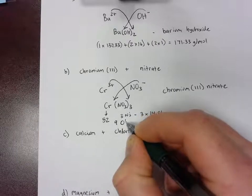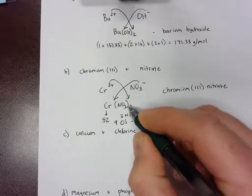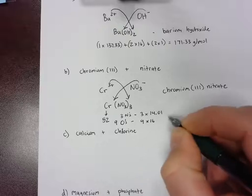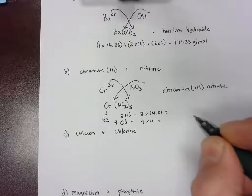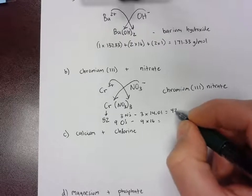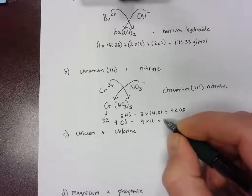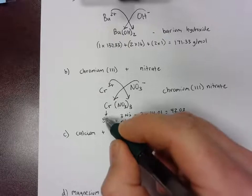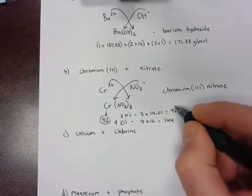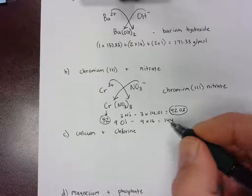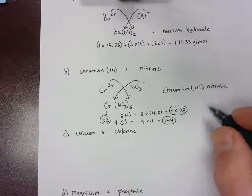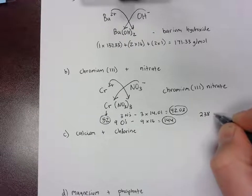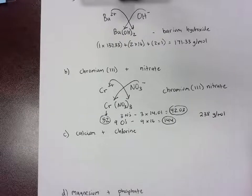We multiply three times 14.01 because again this three is distributed to the nitrogens inside. And then the oxygen, there are nine oxygens, three times three here, so we go nine times 16. This is going to be 42.03 and then this will be 144. We add all these numbers together: we have the 52 from chromium, 42.03 from the three nitrogens, and the 144 from the nine oxygens. And then when you do that you should get 238 grams per mole.